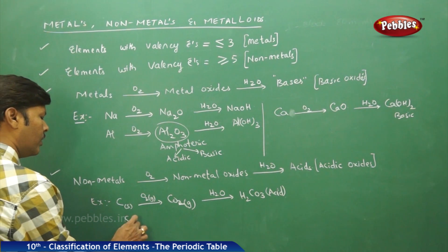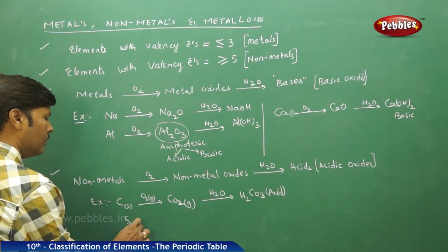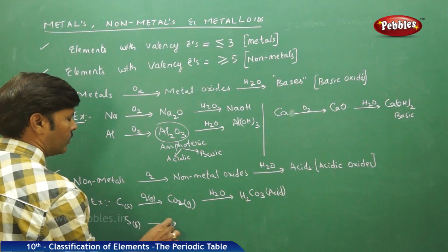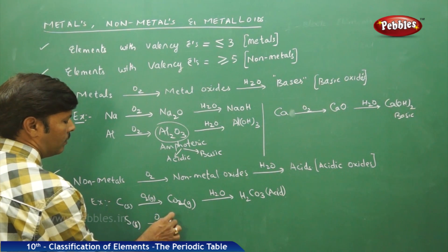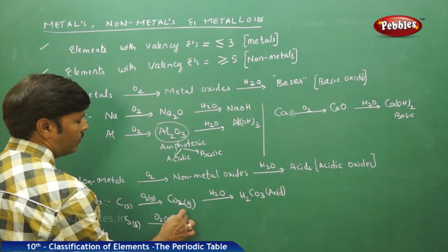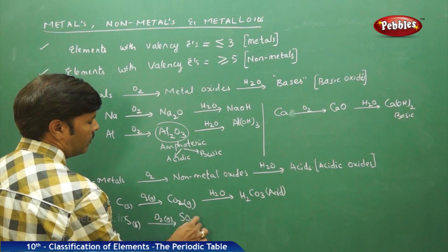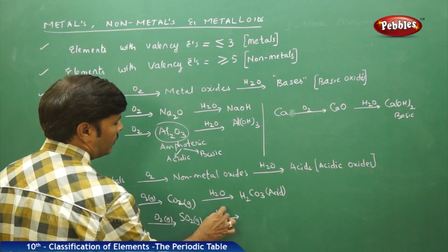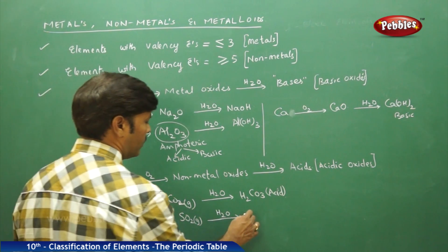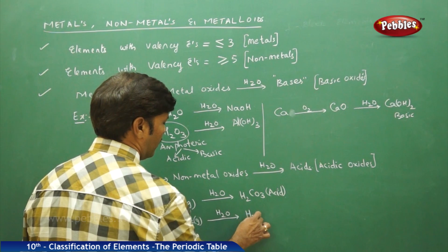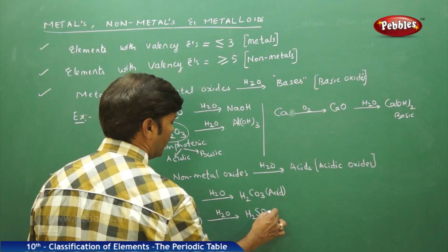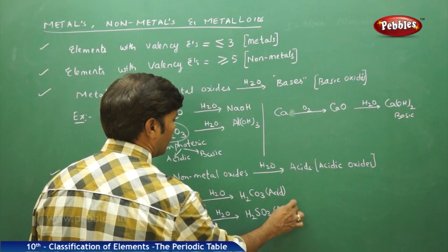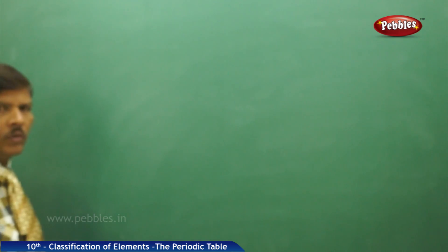Similarly, if you take sulphur, treating sulphur with oxygen gas gives sulphur dioxide gas. Treating sulphur dioxide with water gives H₂SO₃ — again it is an acid.